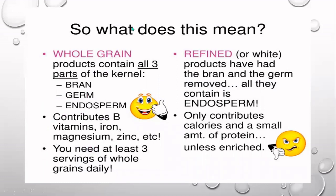From milling you basically get two types of products: whole grain and refined grain. Refined grain is the white flour devoid of the bran part. Whole grain retains all three parts — bran, germ, and endosperm.